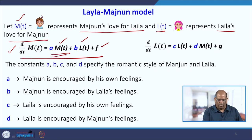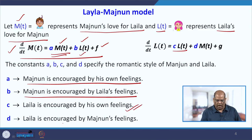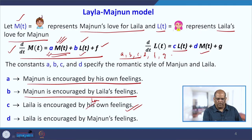The A·M term is the part where Majnu is encouraged by his own feeling, and B·L is the part where Majnu is encouraged by Laila's feeling. Similarly, C·L is where Laila is encouraged by her own feeling, and D is the rate at which Laila is encouraged by Majnu's feeling. Note that no sign has been specified for A, B, C, D, F, and G — a negative value means discouragement, and the positive and negative signs represent love and hate relationships respectively.